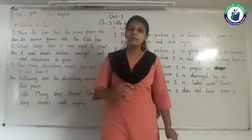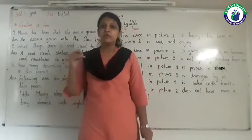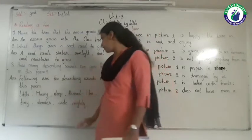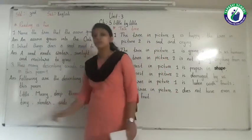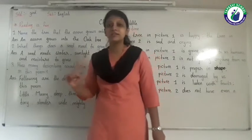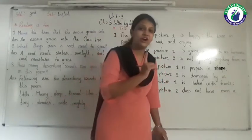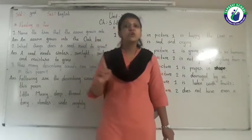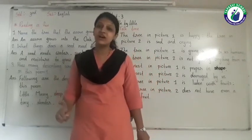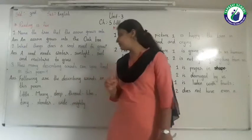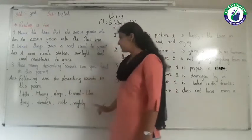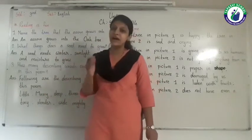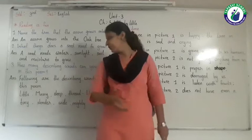Next, 'mossy bud' - the word 'bud' is a noun and 'mossy' is the describing word. Next, 'deep earth' - the word 'earth' is a noun and 'deep' is the describing word. Next, 'thread-like root' - the word 'root' is a noun and 'thread-like' is the describing word. Next, 'tiny shoot' - the word 'shoot' is a noun and 'tiny' is the describing word.